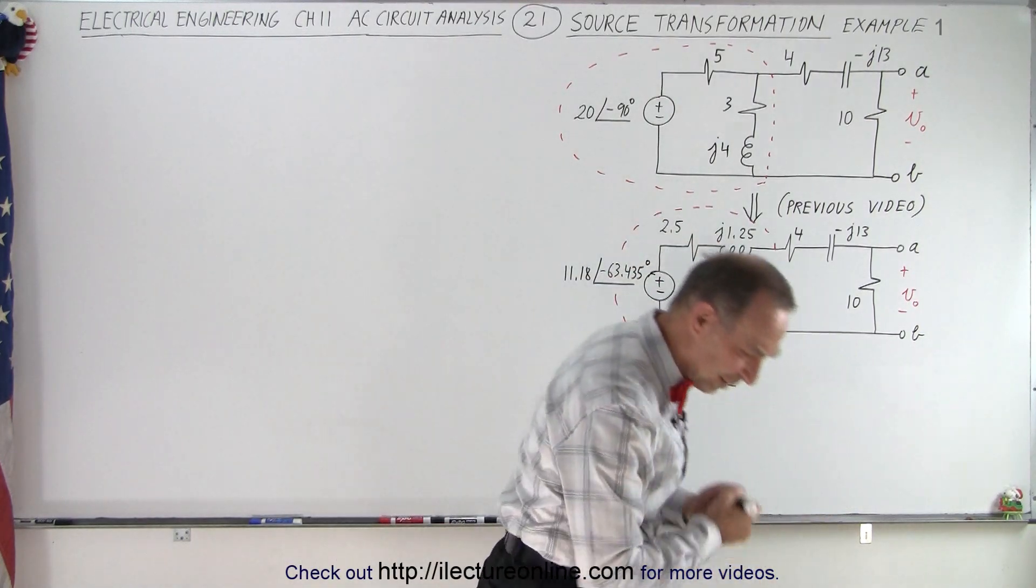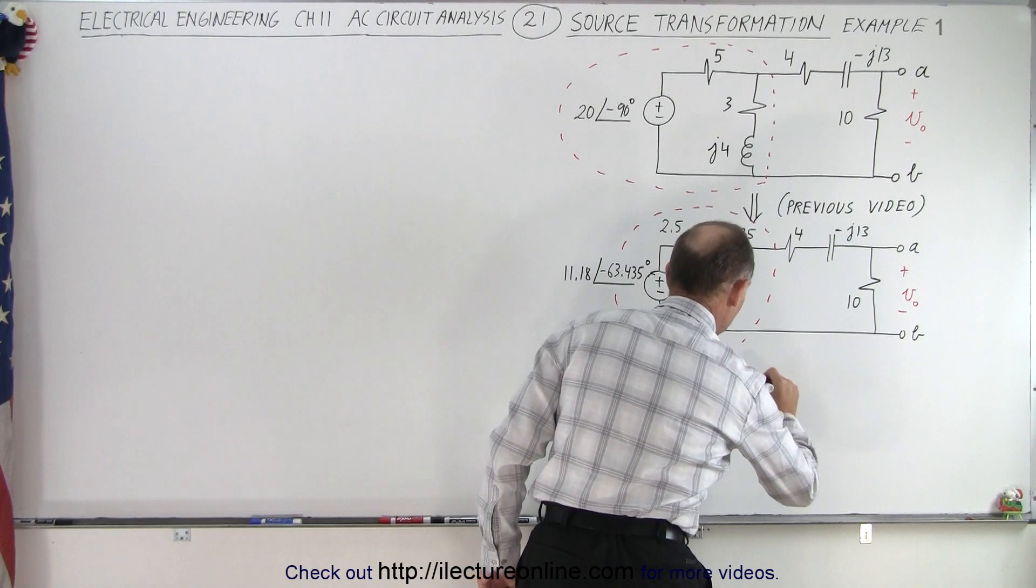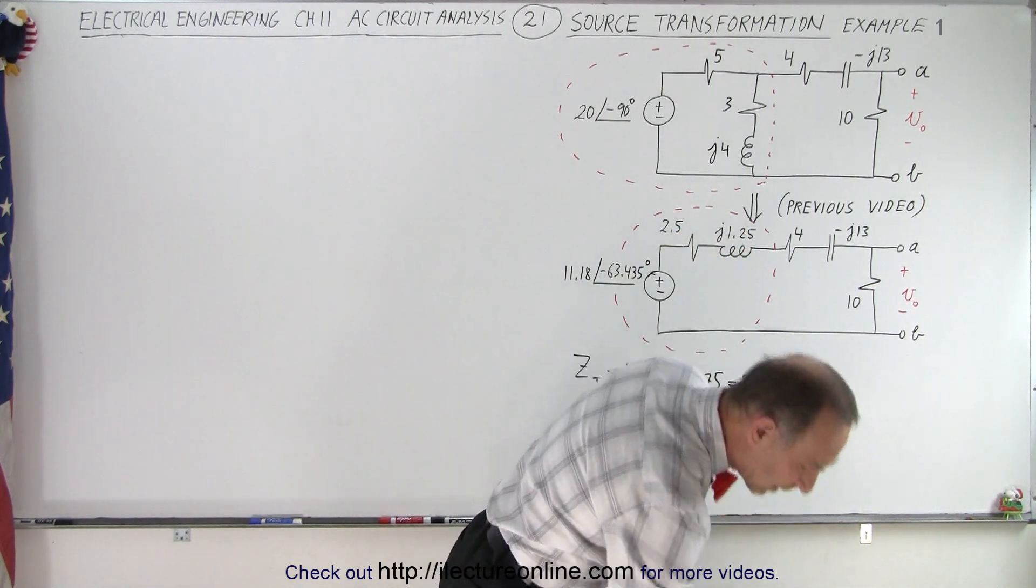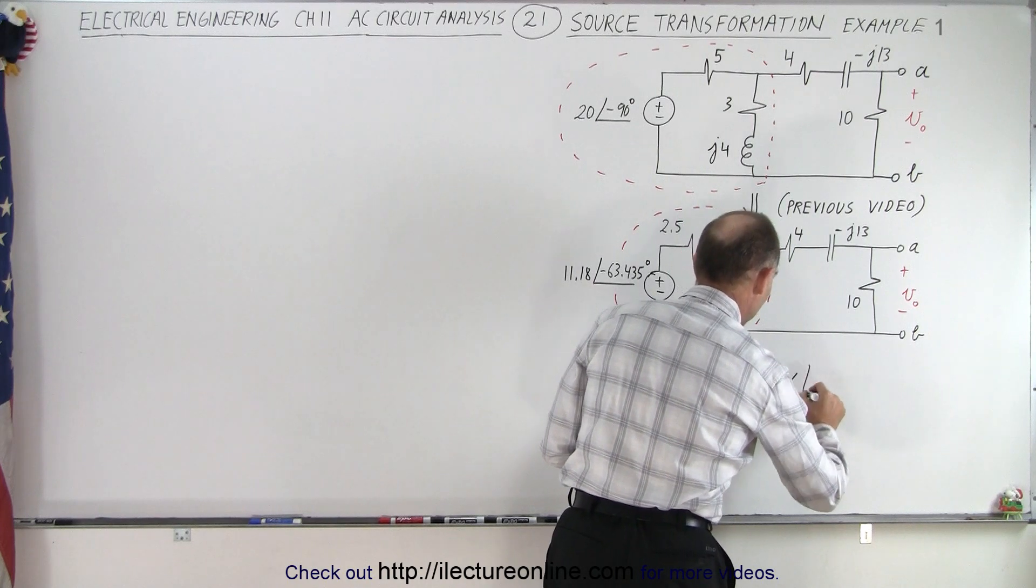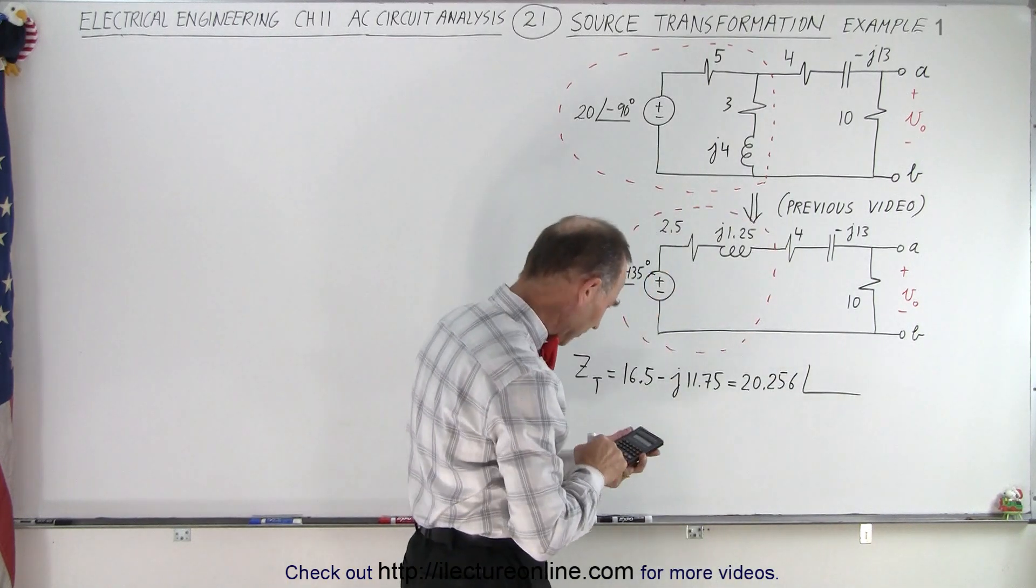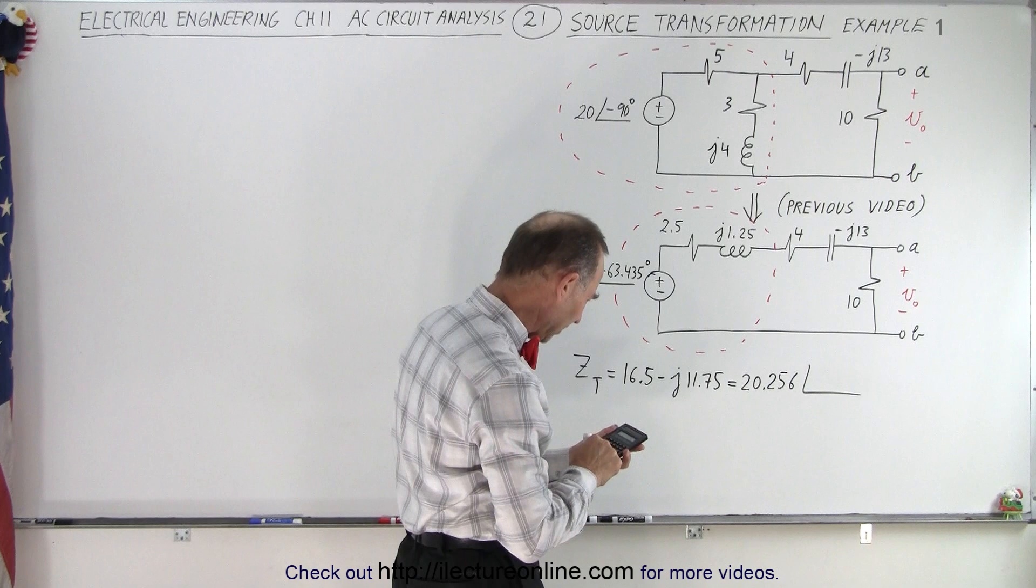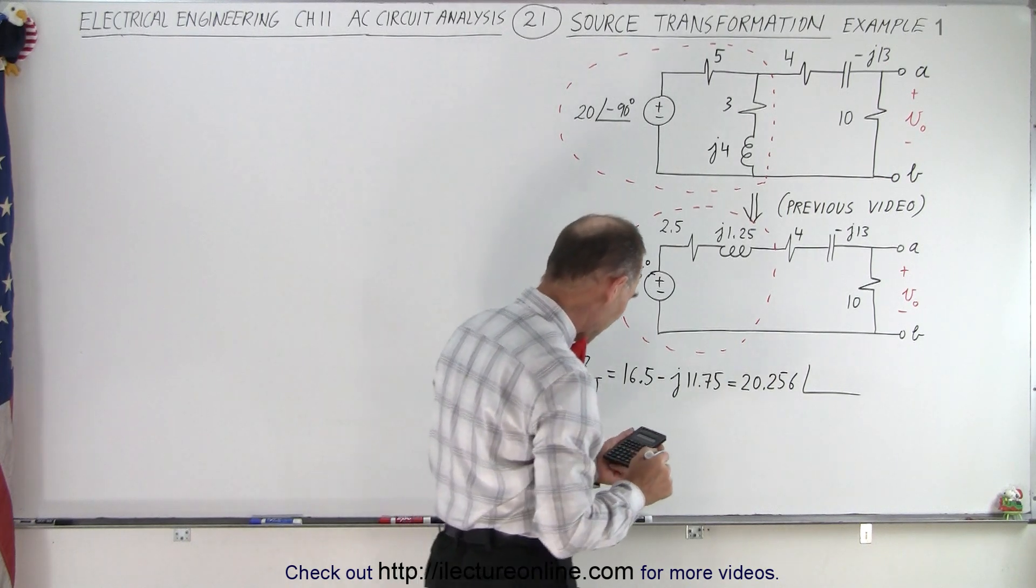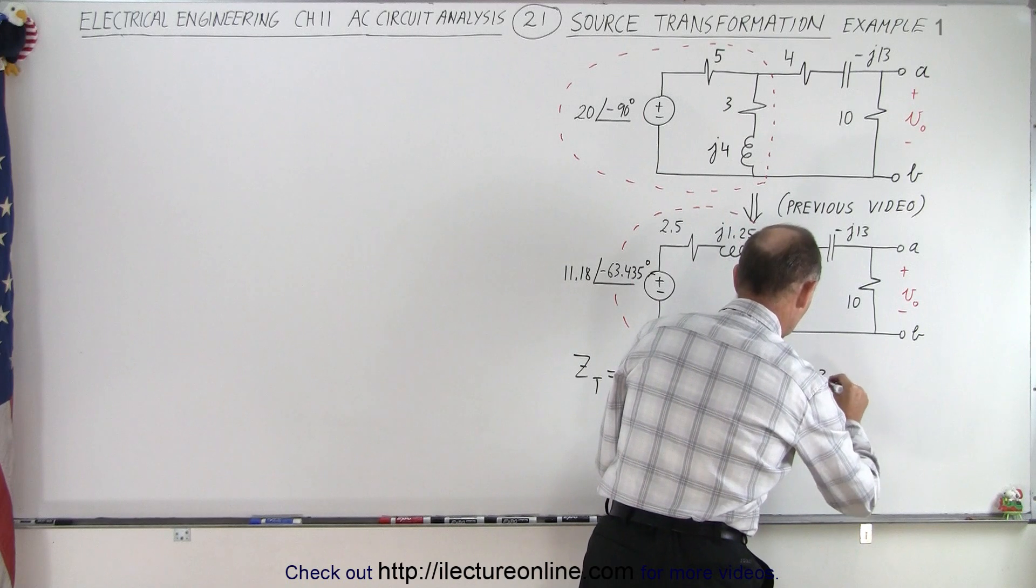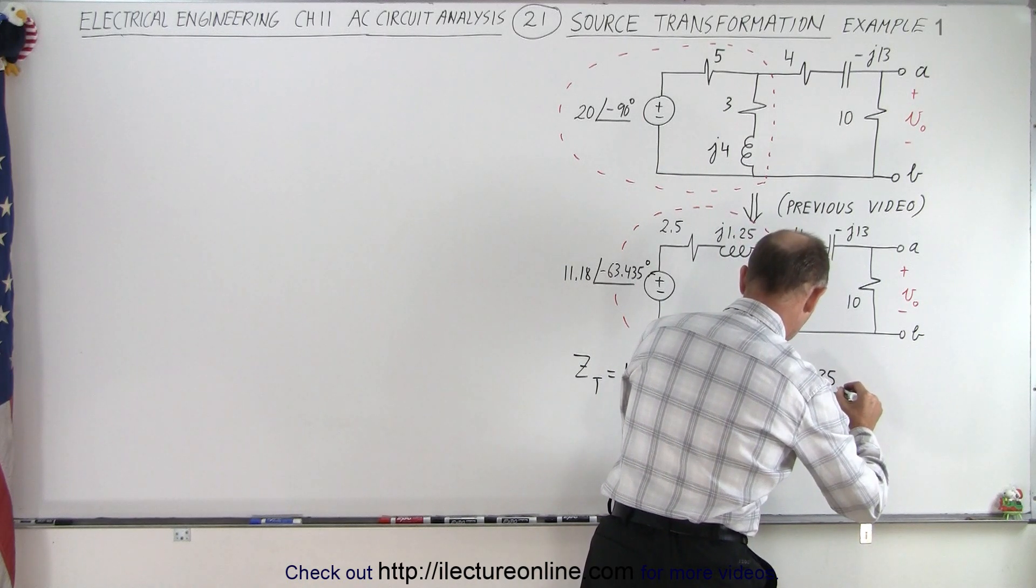I can't get my cap off here. All right, 20.256 with a phase angle of, it's a negative phase angle, 11.75 divided by 16.5, take the inverse tangent, minus 35.455.